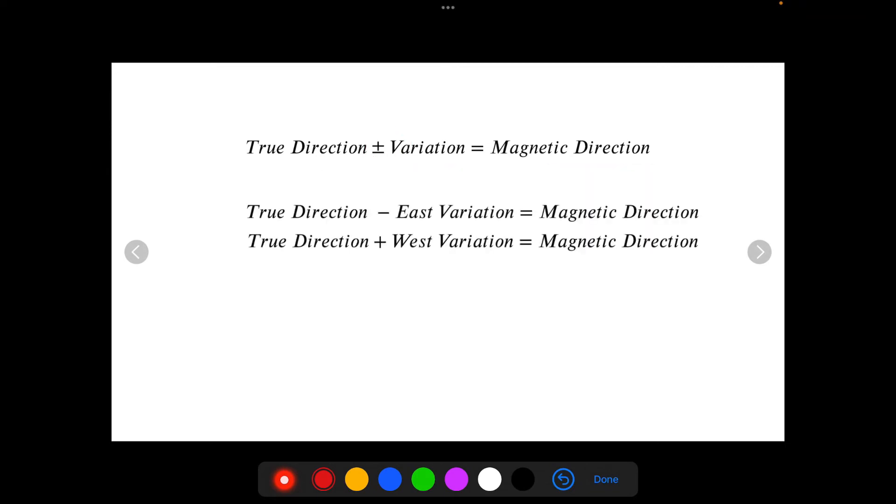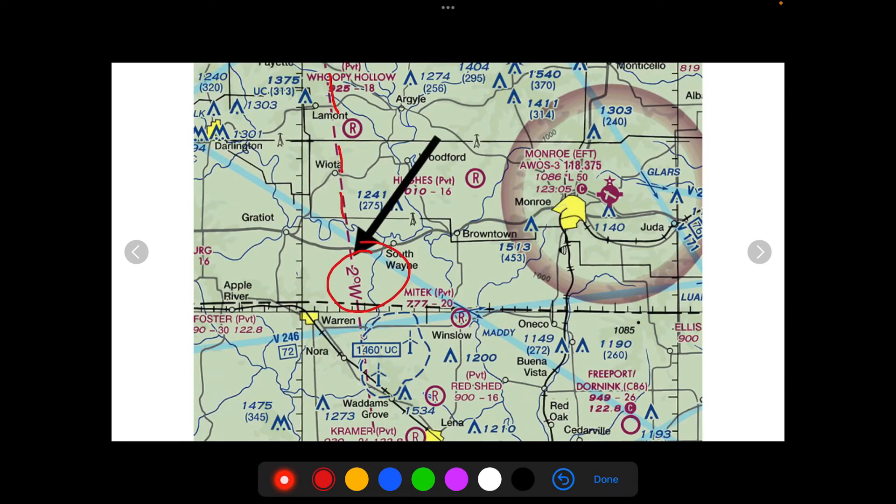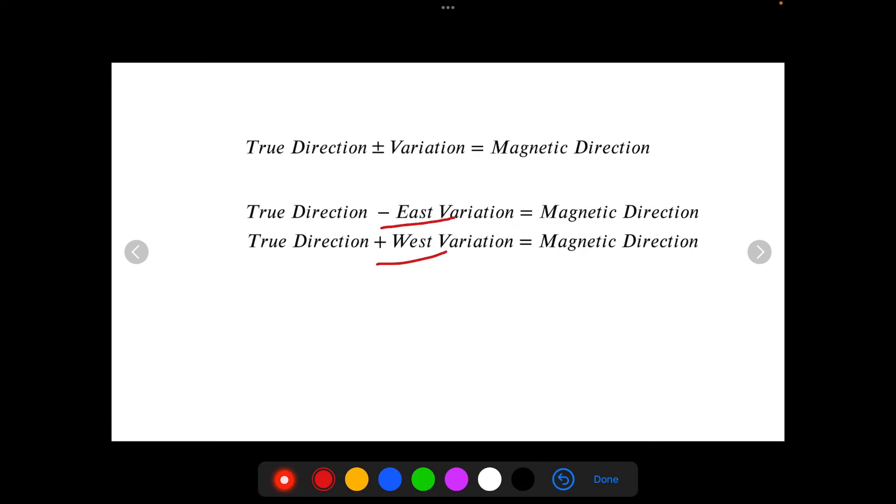We subtract it when it's an east variation. And then we add it when it's a west variation. So for example, in this example right here, we have a two degrees west variation. So that means if our true direction, let's say we plotted our course, we measured our course with our plotter tool on the sectional chart, and our true course is 210 degrees. And we see that the closest variation is that two degrees west, we add it, because it's west. If it was east, we would subtract it.